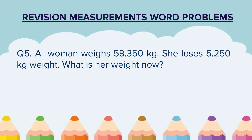Question 5. A woman weighs 59.350 kg. She loses 5.250 kg of weight. What is her weight now? They have told us the weight of the woman, then the amount of weight she has lost, and now we have to find her current weight.